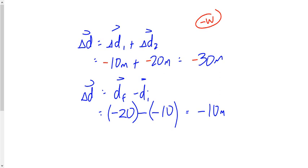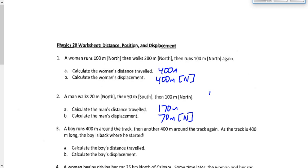I gave you a few questions to work on yesterday, and asked you to finish up the last couple for homework. Number 3 says a boy runs 400 meters around the track, and then another 400 meters around the track again. The track is 400 meters long — the guy is back where he started. What's the boy's distance traveled? 800 meters. The direction is irrelevant because distance is a scalar — we don't pay any attention to which way he was going. His distance is 800 meters.